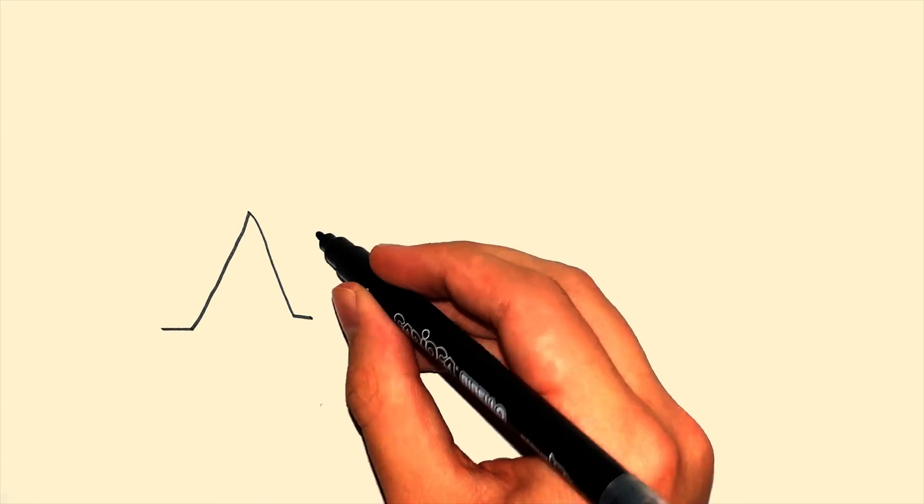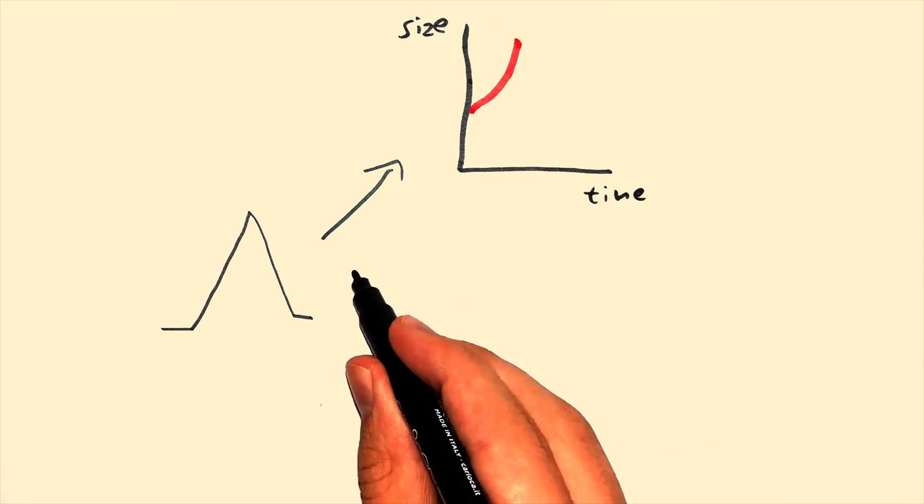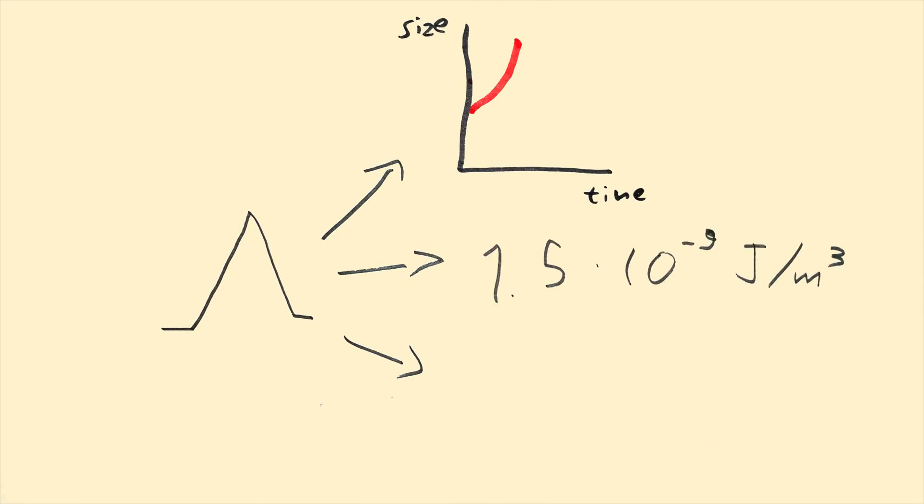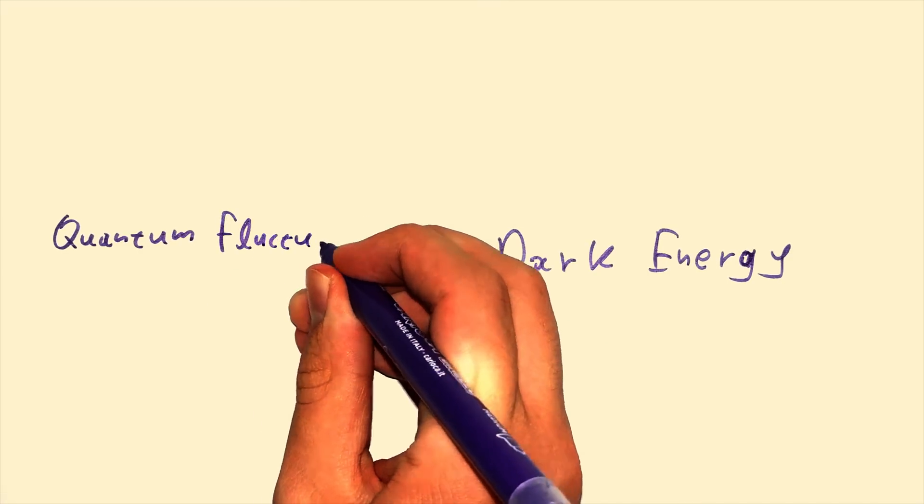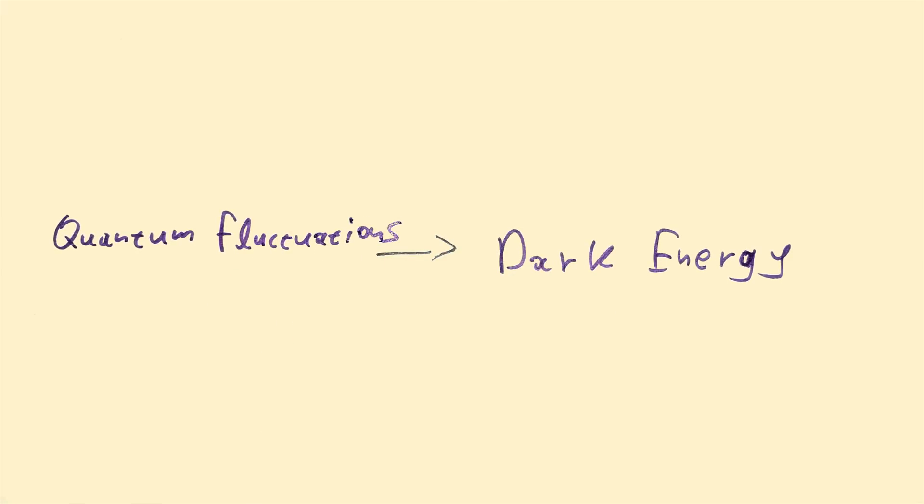So, we know what lambda does, we know what's the value of lambda, but what is lambda? What is vacuum energy? Well, the leading interpretation of dark energy suggests that this energy comes from quantum fluctuations described by quantum field theory.